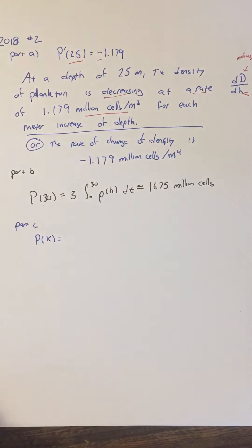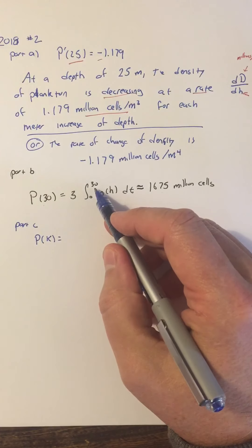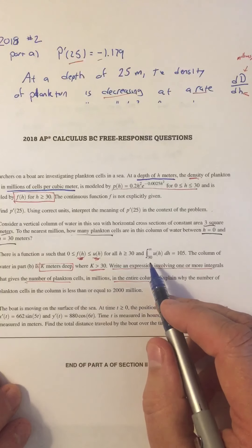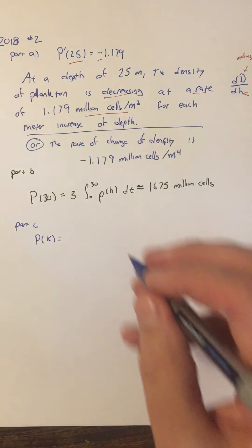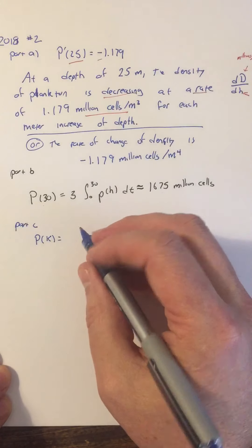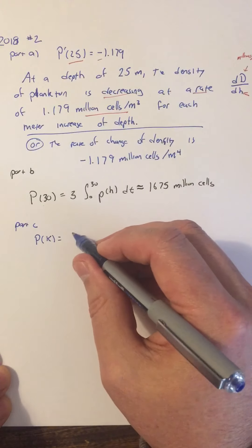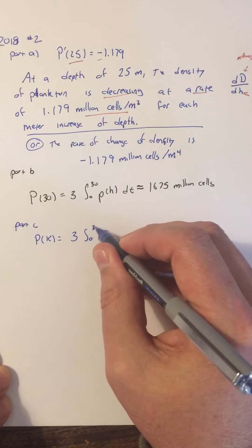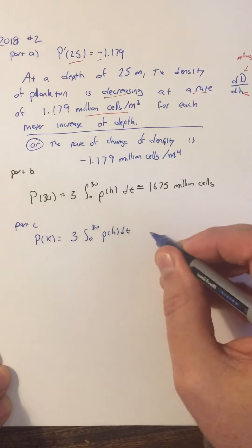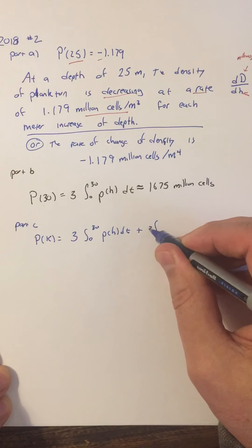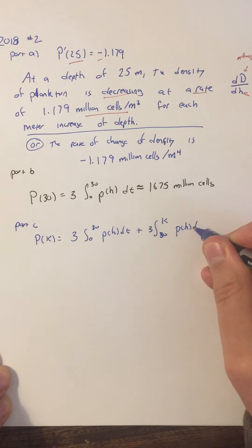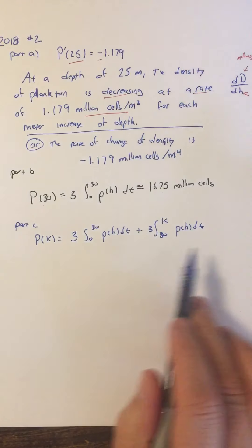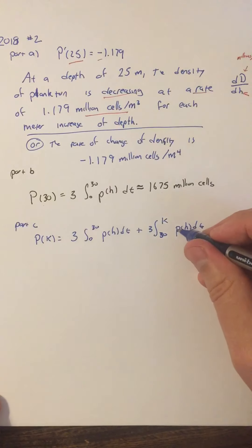We know the integral from 0 to 30 — that gives the plankton count to a depth of 30. For depths from 30 and higher up to k, we have a separate piece. We can break this up: first, 3 times the integral from 0 to 30 of p of h dh, plus 3 times the integral from 30 to k of p of h dh.